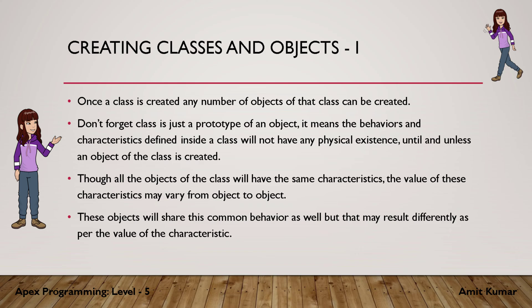For example, there is a common human definition which can be called a human class definition, and we all are objects of that class. We have certain characteristics like eyes, ears, nose, mouth, hands, and legs. We are all different objects of that same class, but some objects will have different values for those characteristics.